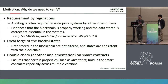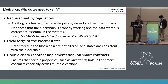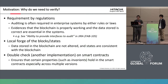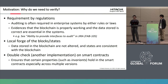Local forgery of a block or state by an administrator is dangerous. Stored data in the blockchain should not be altered, and the state must be consistent with the blockchain — that's mandatory. But a potential risk is that a local administrator can change the block or current state, so a double check is necessary.